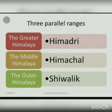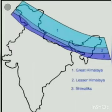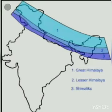Now let us talk about the parallel ranges of the Himalayas. The Himalayas have three parallel ranges: number one, the Greater Himalayas or Himadri; number two, the Lesser Himalayas or Himachal; number three, the Outer Himalayas or Shivalik. In this map you can see the location of these three ranges — number one is showing the Himadri, number two is showing the Himachal, and number three is showing the Shivalik range.